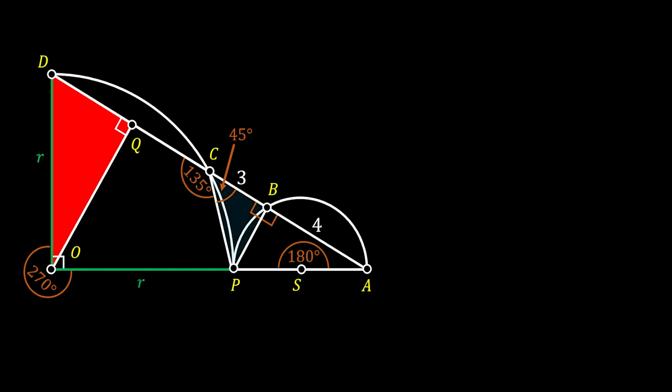Now we set our attention to the blue triangle PCB. Since this triangle has angles of 90 degrees and 45 degrees, the remaining acute angle must also be equal to 45 degrees. So we can conclude that this triangle must be an isosceles right triangle — which means line CB is congruent to line PB.